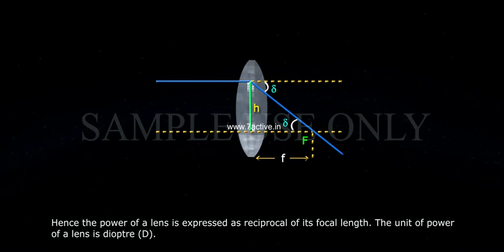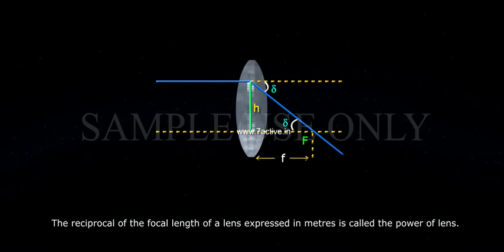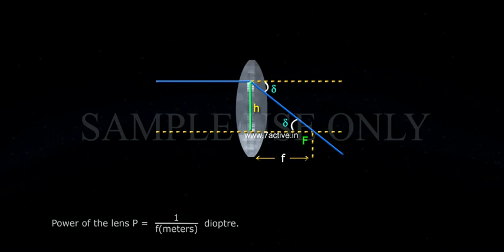Hence, the power of a lens is expressed as a reciprocal of its focal length. The unit of power of a lens is diopter D. The reciprocal of the focal length of a lens expressed in meters is called the power of lens. Power of the lens P equals to 1 by F meters, diopter.